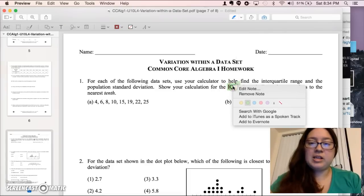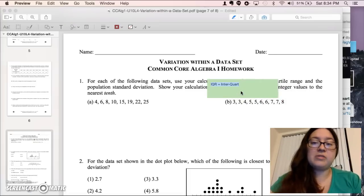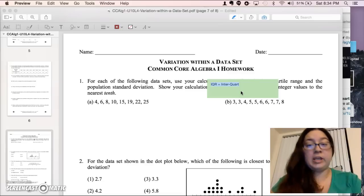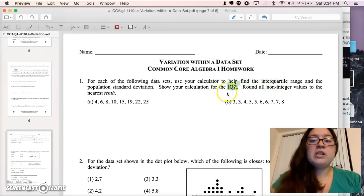Let's remove the note, and let's right-click again and add a note. There we go. IQR is interquartile range. So now there's a note attached.